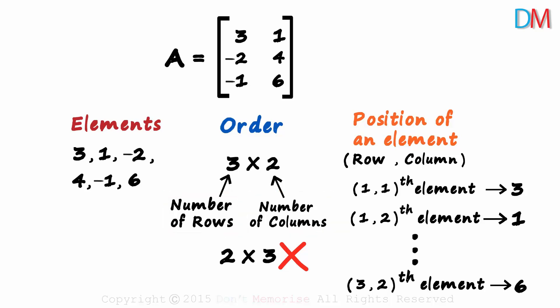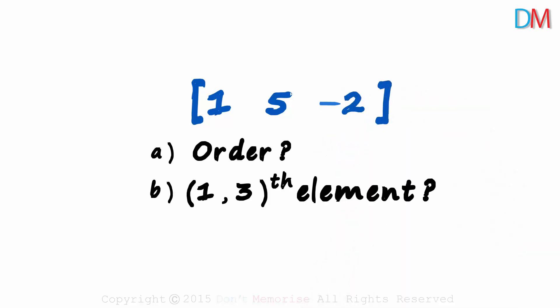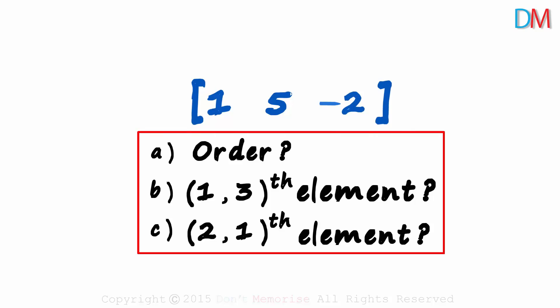So let's try understanding these concepts with an example. The matrix given to us is 1, 5, minus 2. We have been asked to find its order, the 1, 3-eth element, and the 2, 1-eth element. Pause the video and try to answer these three simple questions.